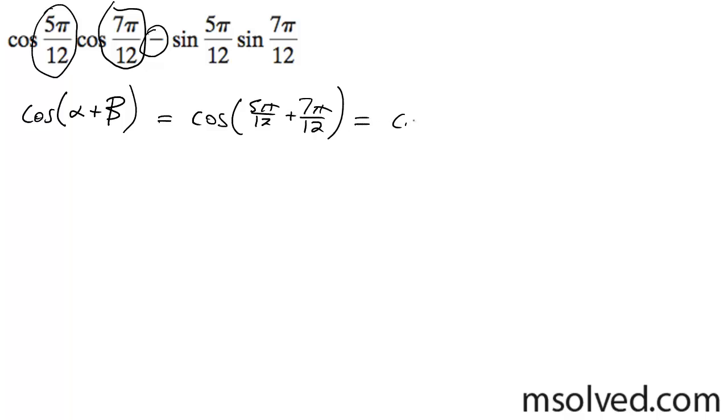Which ends up being the cosine of 12π/12, which is simply the cosine of π. The cosine of π—in this case, π is halfway around the circle, which is right here.